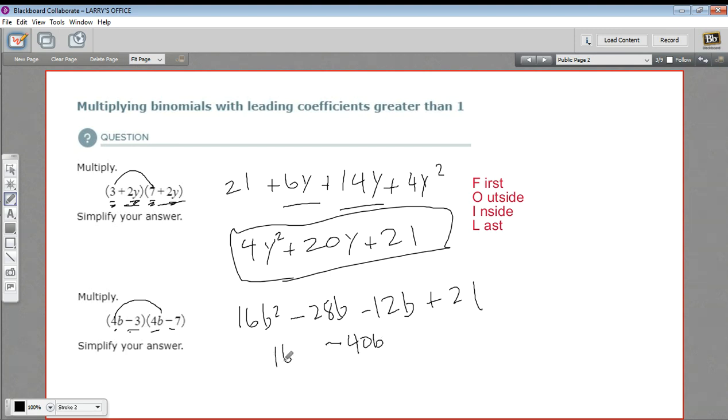And then we have our 16b squared and our plus 21. And that's as simple as it can get. So that is how to multiply binomials.